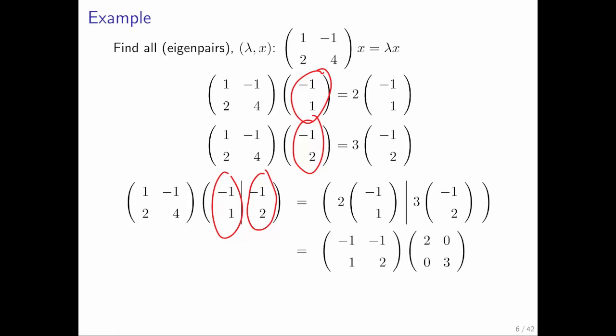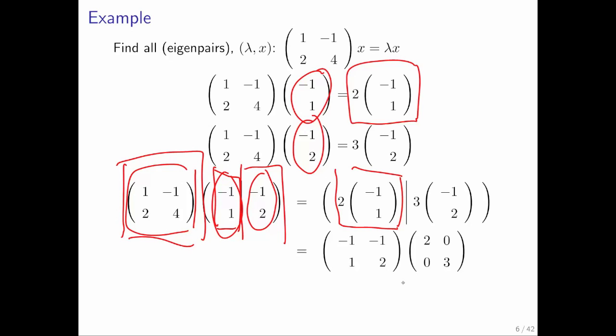then notice that this matrix times the first column should just be equal to this right here. So we make that the first column on the right here. And this matrix times the second column should be just this right here because we saw this.